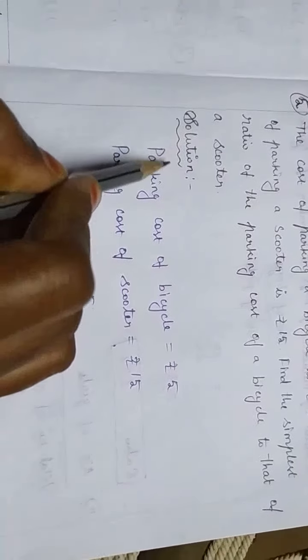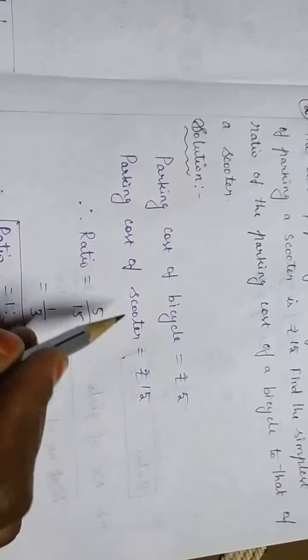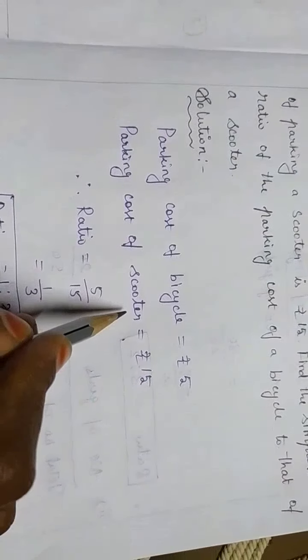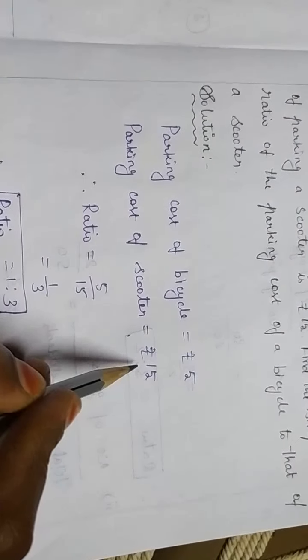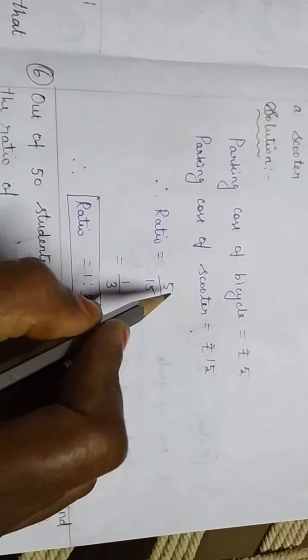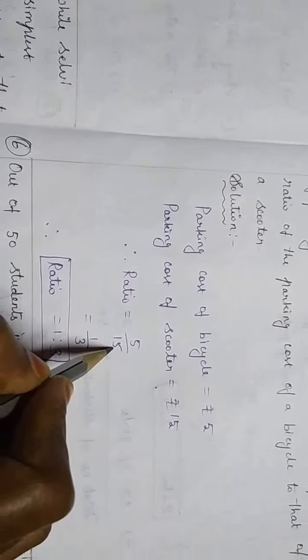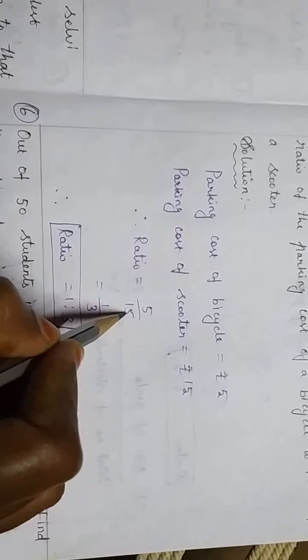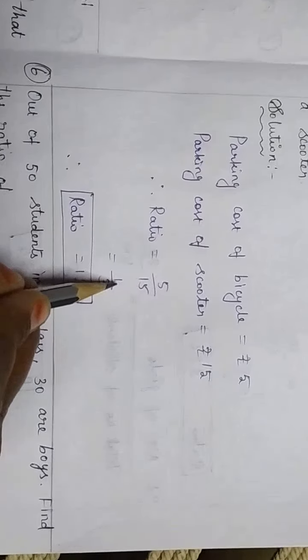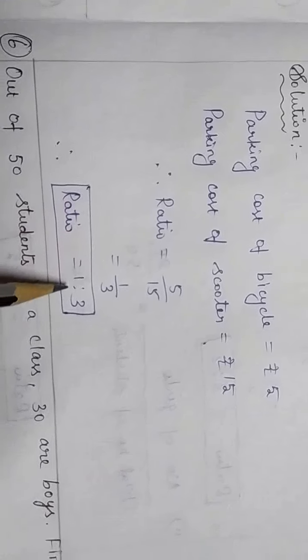We will see the solution. Parking cost of a bicycle is Rs. 5. Parking cost of a scooter is Rs. 15. Now we have to find the ratio: parking cost of a bicycle divided by parking cost of a scooter, so 5 divided by 15. By cancelling this we will get 1 divided by 3. Now we have to write in ratio: 1 is to 3.